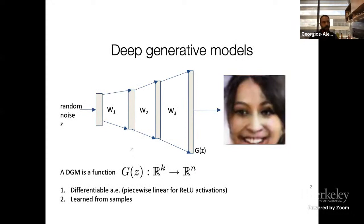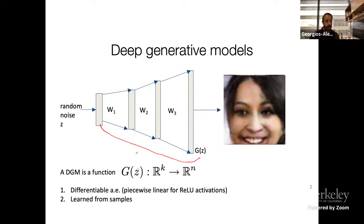Deep generative models like GANs, variational auto-encoders, score-based generators, and so on are all, within first approximation, data-driven ways to learn distributions, learn data. For GANs and VAEs, I want you to think of a generator as a box that takes a low-dimensional latent space Z in K dimensions and produces an output G(Z) in N dimensions — images up to 1024 by 1024, so up to 3 million dimensions for color. K in our experiments goes from 128 up to 512.